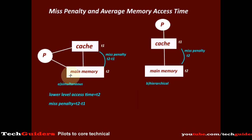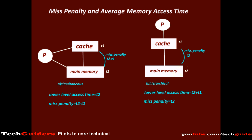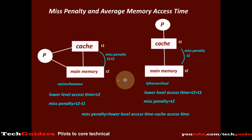In simultaneous access, the overall miss time or the overall lower level access time is t2, and the additional time during the miss or the miss penalty is t2-t1. In hierarchical access, the overall time spent during the miss or the lower level access time is t1+t2, and the additional time required for a miss is t2. So in general, miss penalty is the difference between the lower level access time and the cache access time, or the difference between the lower level access time and the hit time t1.